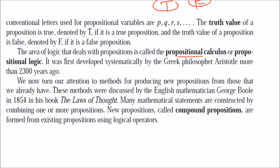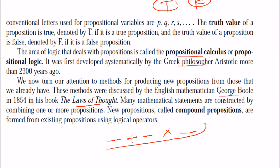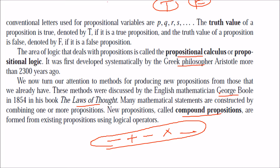Propositional logic was systematically developed by Greek philosopher Aristotle, 2300 years ago. Then came George Boole, an English mathematician. In 1854, in his book 'Laws of Thought,' he proposed many methods for it. So if you have one, two, or three propositions, we can combine them — add them, multiply them, negate them, draw inferences from them. We call these compound propositions and we use logical operators.